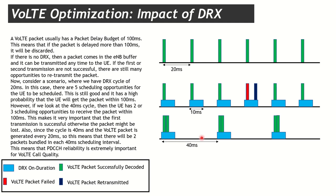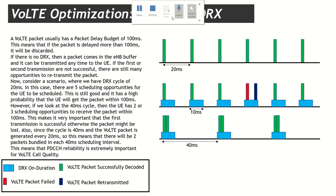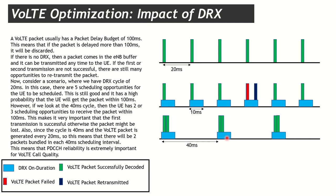Another option is to increase the DRX cycle from 20 milliseconds to 40 milliseconds. The UE gets up every 40 milliseconds and receives two combined packets, then sleeps for 30 milliseconds. So this packet will be delayed in the buffer and two packets will be combined to be sent together. We now have around 60 milliseconds of sleep time out of 100, increasing battery efficiency further — but we have also increased the delay on some packets by 20 milliseconds.